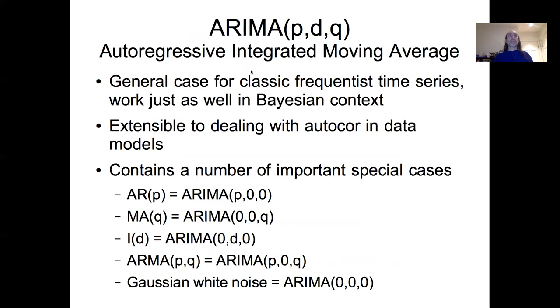So we can put all of them together and write an ARIMA model which combines the autoregressive, integrated, and moving average components all together. So p lags, d differences, moving average up to q lags. And it's worth noting this general case is very common in classic frequentist time series analysis, but all of this could be implemented just as well in a Bayesian context. There's nothing that says you can't estimate any of these parameters in a Bayesian context.